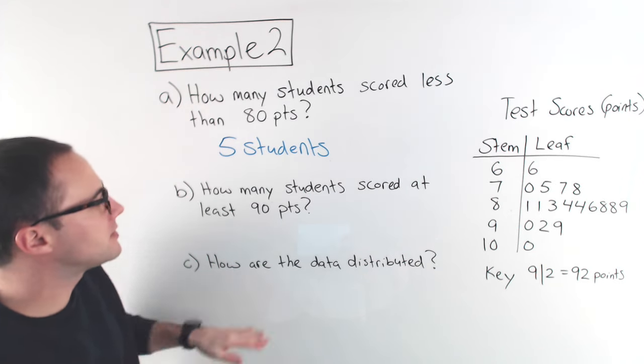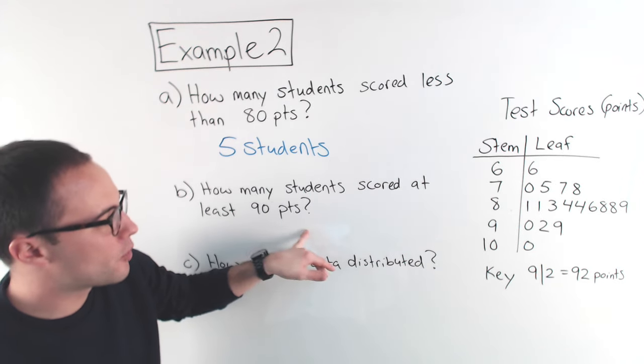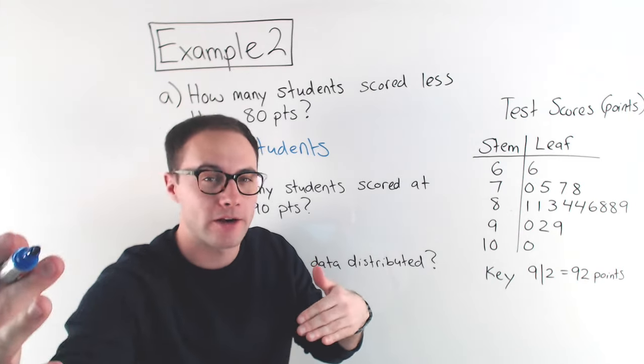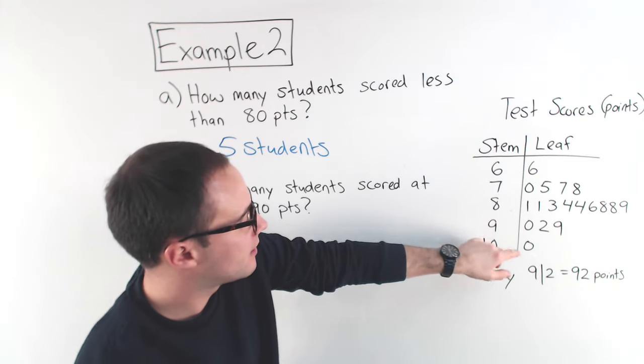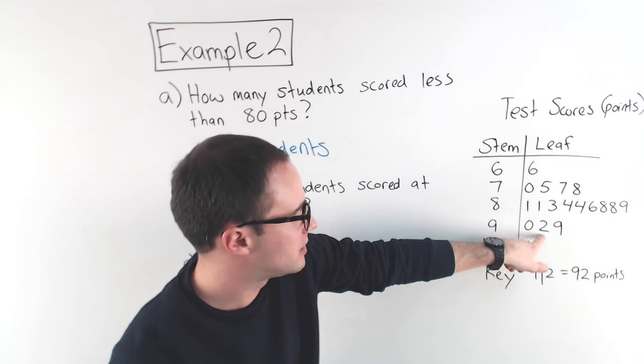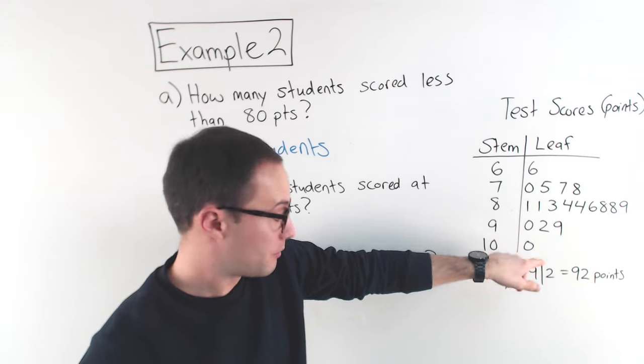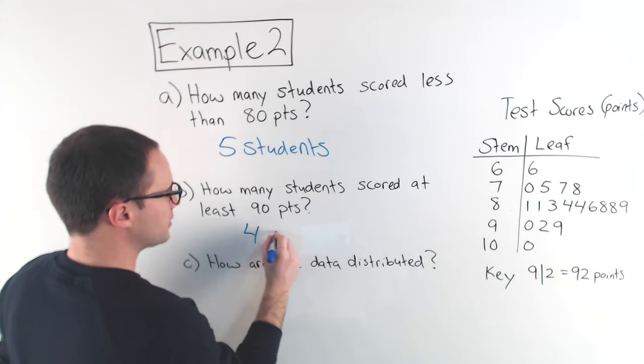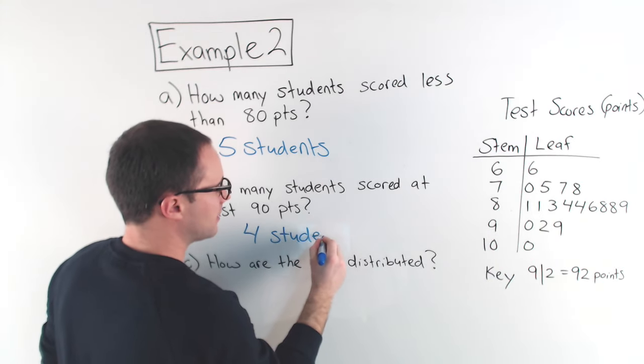Next one. B. How many students scored at least 90 points? At least, that means 90 points or greater. So, let's see. This zero here, that's 90 exactly. So there's 1, 2, 3, and one person got 100 points. So, that's 4. 4 students got at least 90 points.